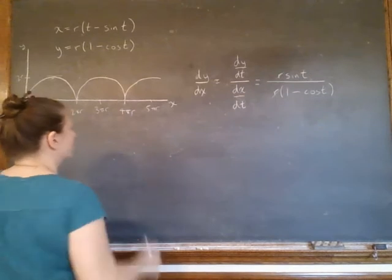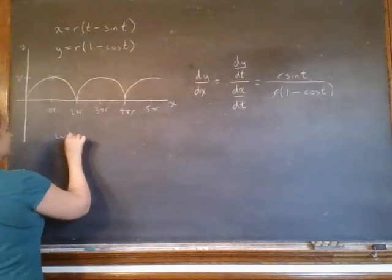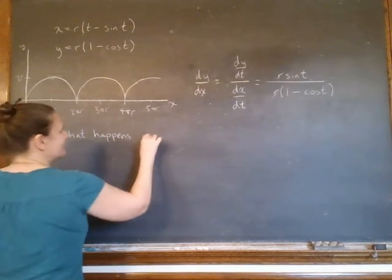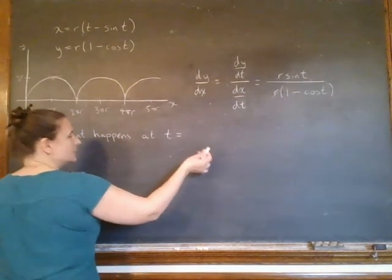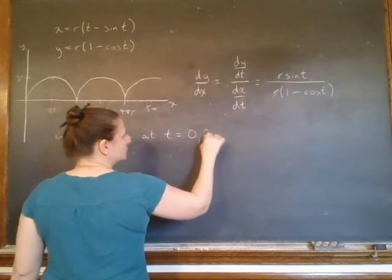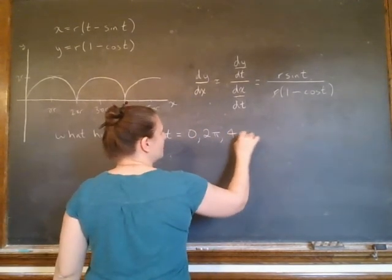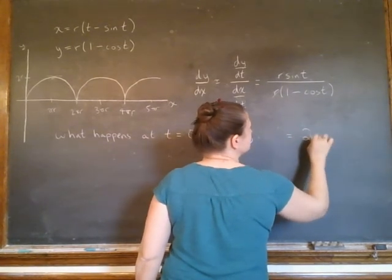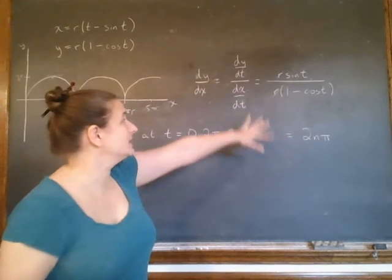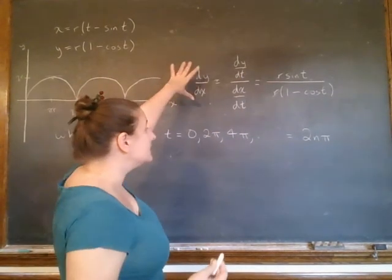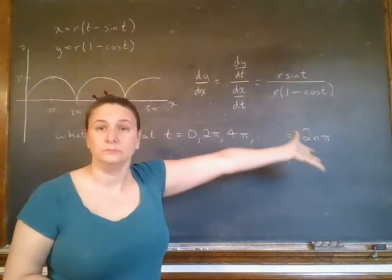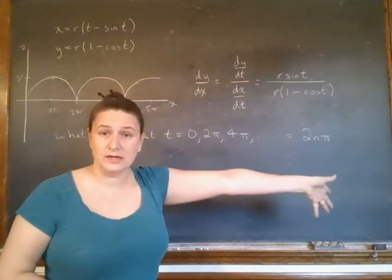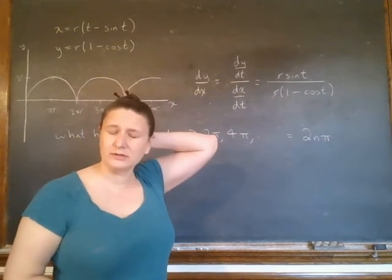So our point is the following. Let me rewrite what happens at t equals 0, 2 pi, 4 pi, etc. So we're going to call it 2m pi. Because when I stick that into the dy/dx, I'm going to have 0 over 0. So I'm going to take the limit and see what I'm going to get. If I do get infinity, that means it's a vertical tangent.